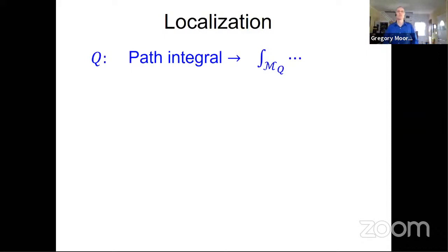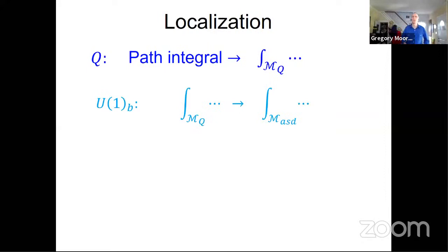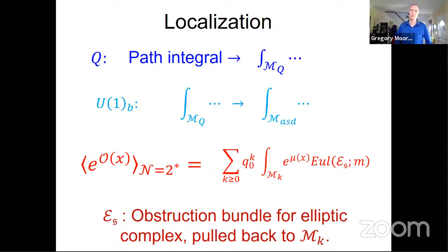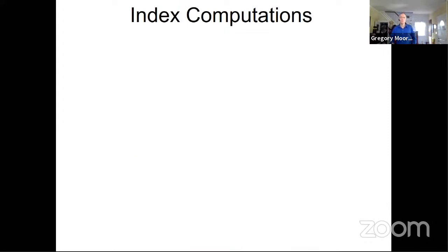We can use localization. There's a non-rigorous localization from the path integral to an integral over this moduli space M_Q, which in principle mathematicians could define rigorously. Then there's localization from this U(1) symmetry from M_Q to the fixed-point locus — the moduli space of instantons. That two-step localization is where this equation for the generating function comes from. The virtual bundle E_S comes from the obstruction bundle for the elliptic complex of the non-abelian monopole equations, then pulled back to M_Q.